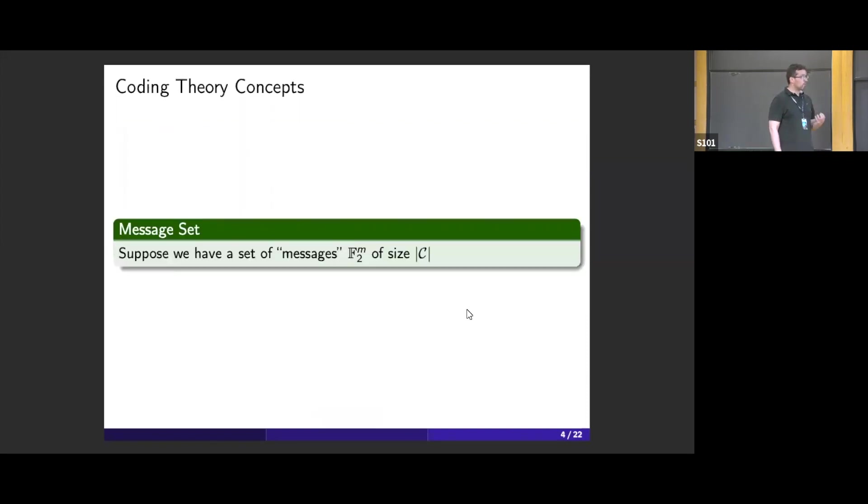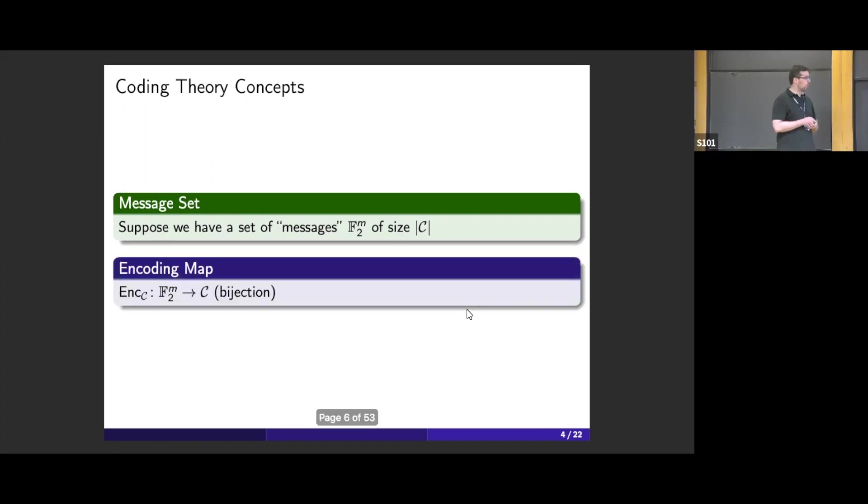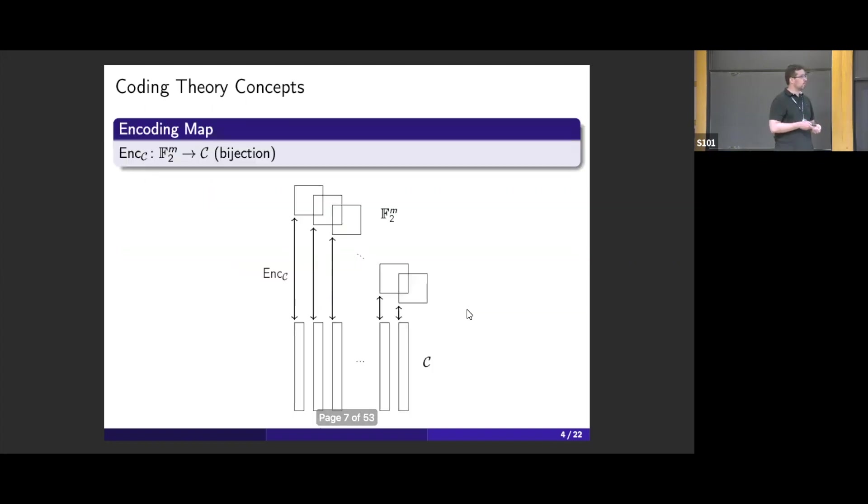It's very convenient to associate messages with code words. Typically we think that we have a message space of n bits of the same size of our code, and then we consider some encoding map that takes a message, an n-bit stream, into a code word in a bijective way. Each message gets associated with a code word in our code via this encoding map.